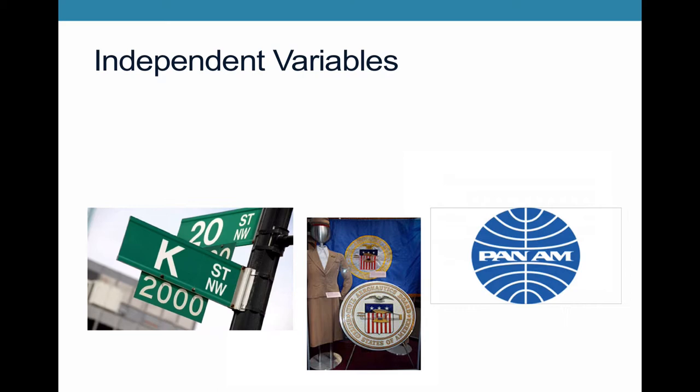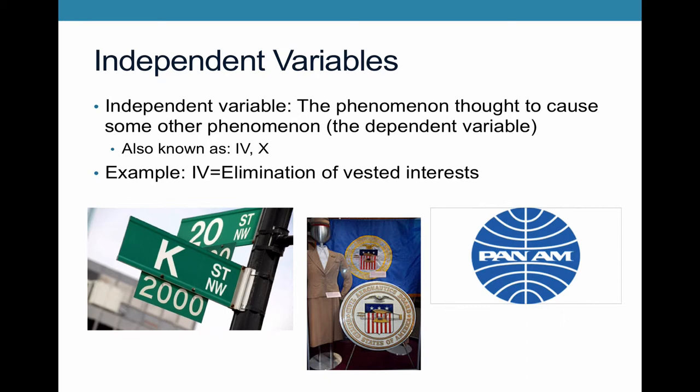Thinking about independent variables: the independent variable is the cause we're looking at — the phenomenon we think is going to cause the other phenomenon, the dependent variable. We can call this IV, or simply X. For this example from Potashnik, the independent variable is the elimination of vested interests. One of Potashnik's arguments is that if a reform is able to completely eliminate groups that may oppose it in the future, then it's going to have a much greater chance of being durable.